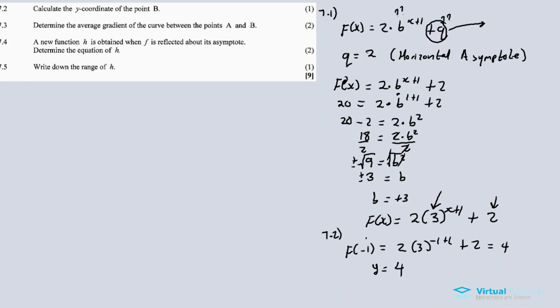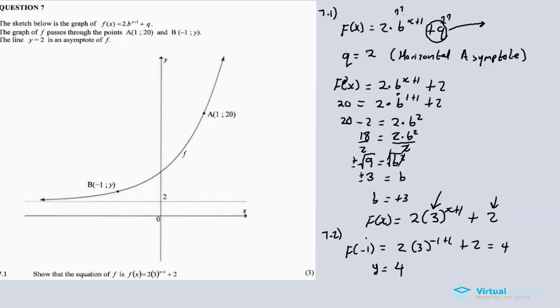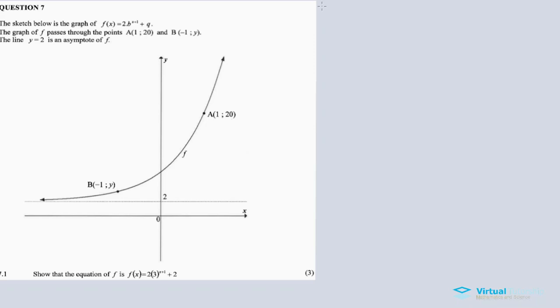Let's go to 7.3. Determine the average gradient between points A and B. Another straightforward question. For the average gradient, you calculate it like a normal gradient using the gradient formula.